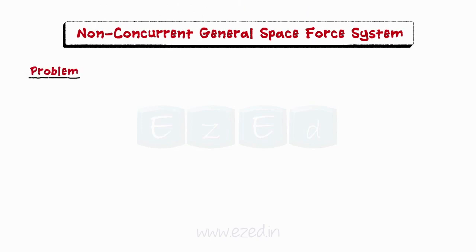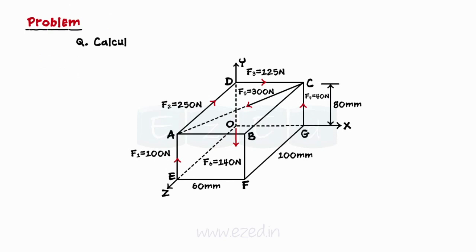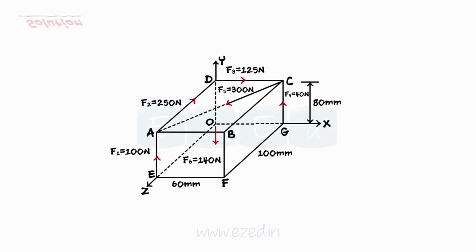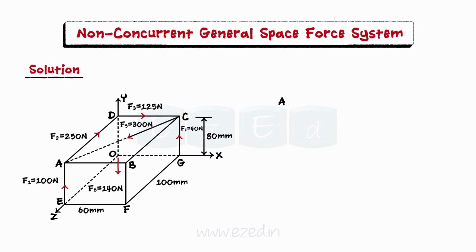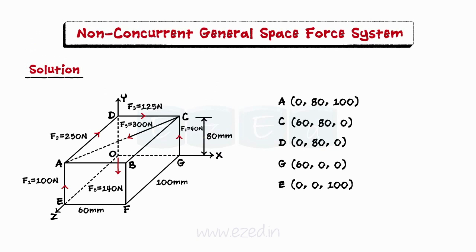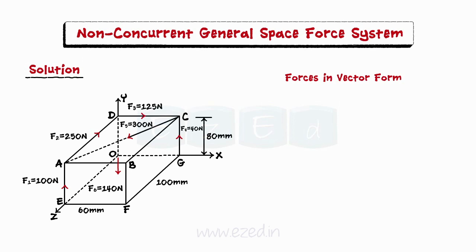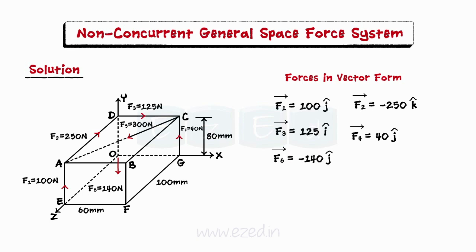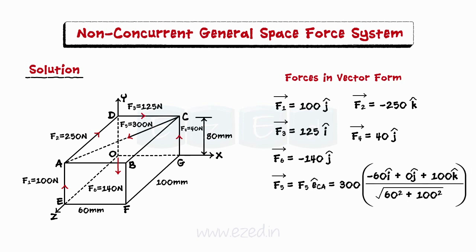Let us consider this problem. For the general space force system shown, calculate the resultant force and moment at the origin. We will first define the coordinates of the points A, C, D, G, and E using the lengths of the sides. Next, we will express all the forces in vector form. We can directly express forces F1, F2, F3, F4, and F6 in vector form as they are parallel to one of the coordinate axes. To express F5 in terms of vectors, we will first find the unit vector along CA and then multiply with the magnitude. Thus, we have expressed all the forces in the system in vector form.